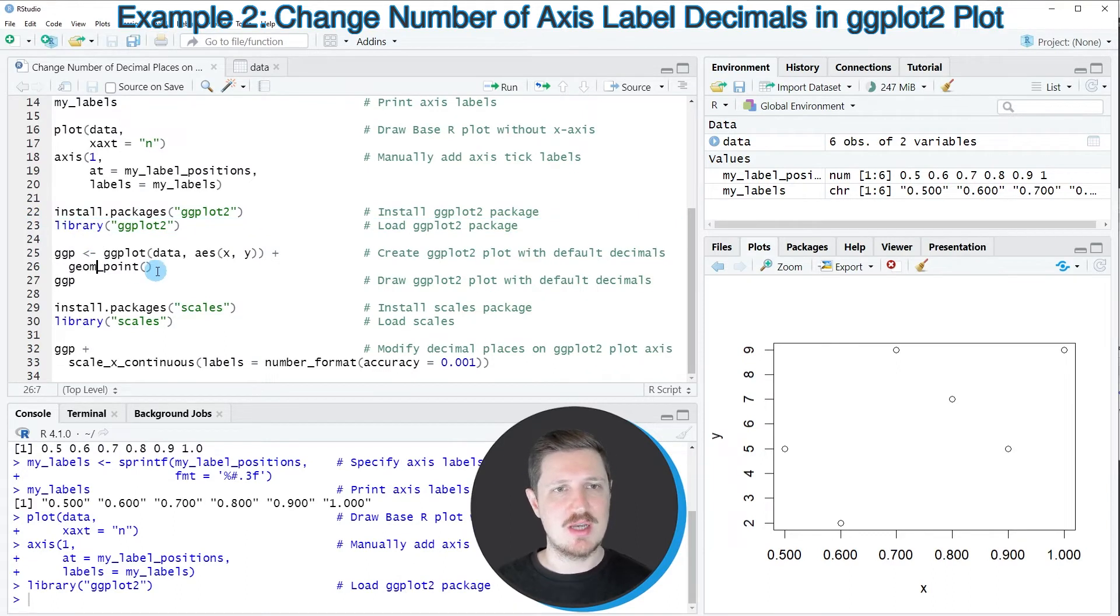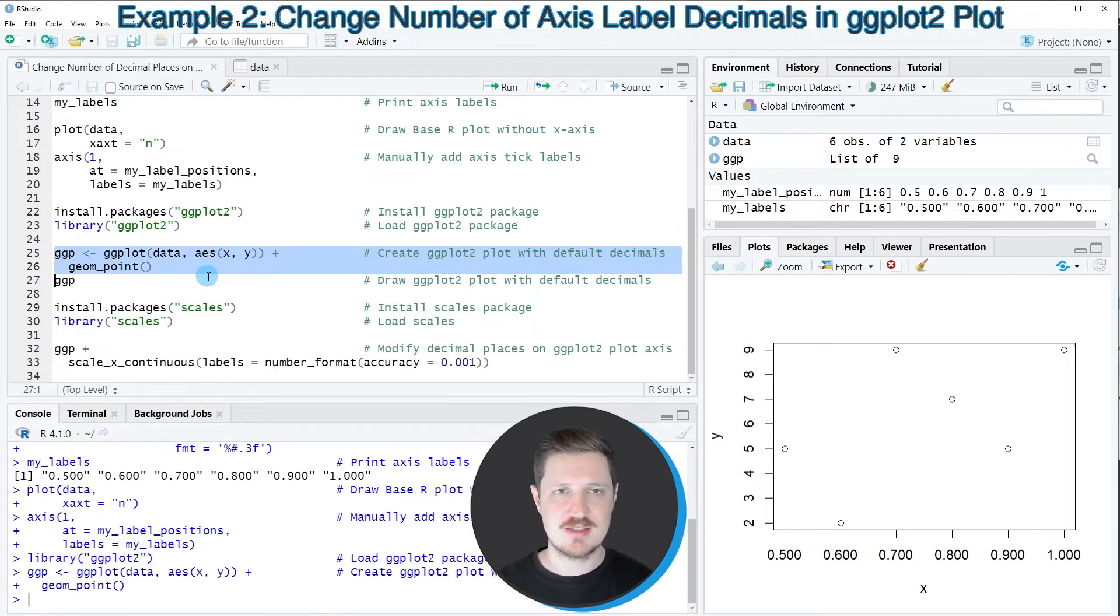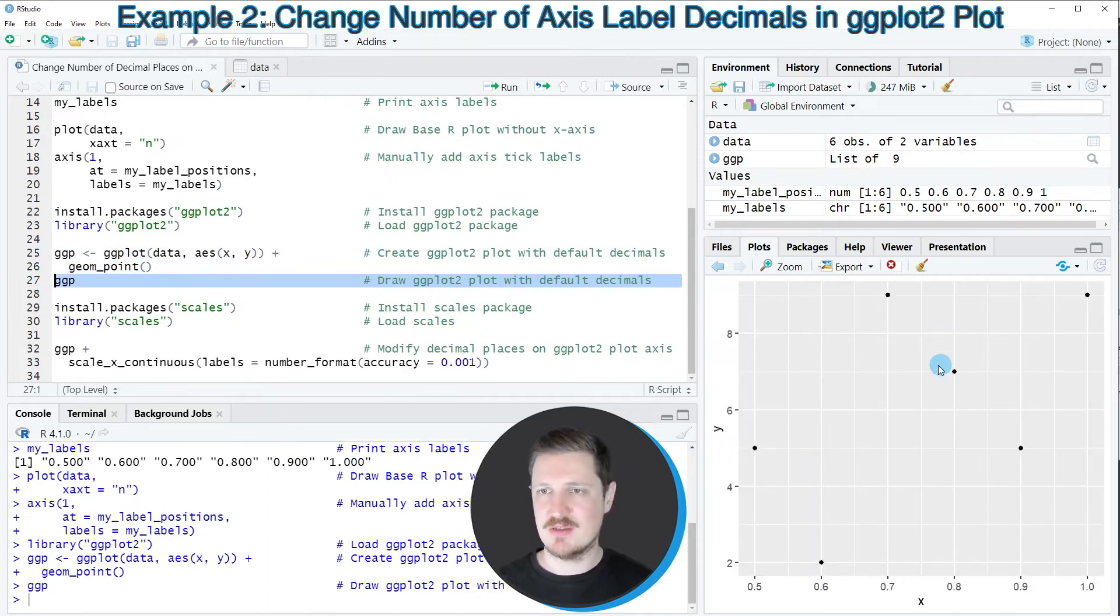And then in the next step, I'm drawing our ggplot2 plot using the ggplot and geom_point functions, as you can see in lines 25 and 26. So after running these lines of code, a new plot object called ggp is appearing at the top right. And we can draw this plot by running line 27.